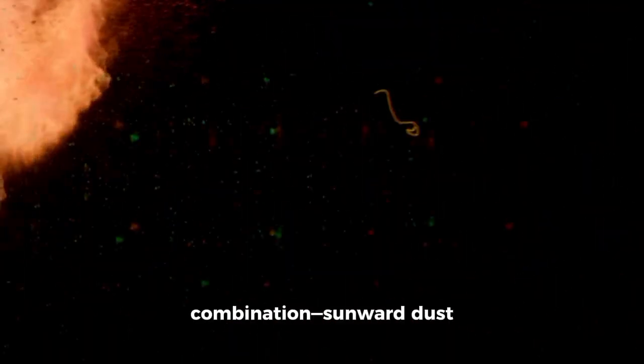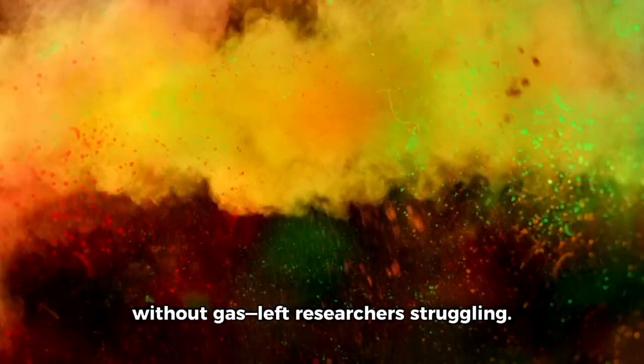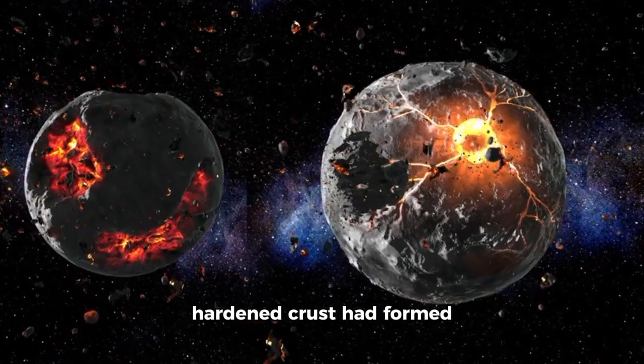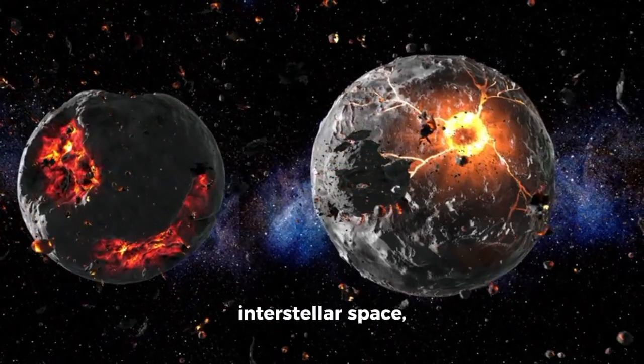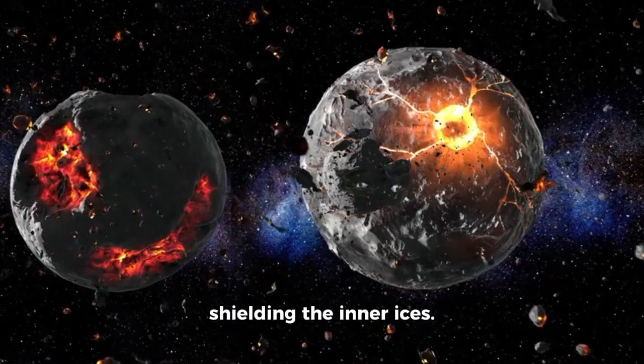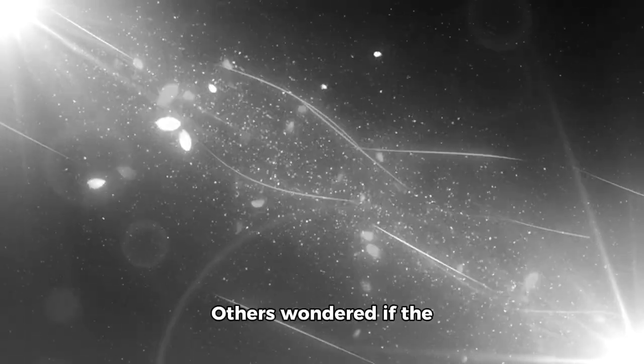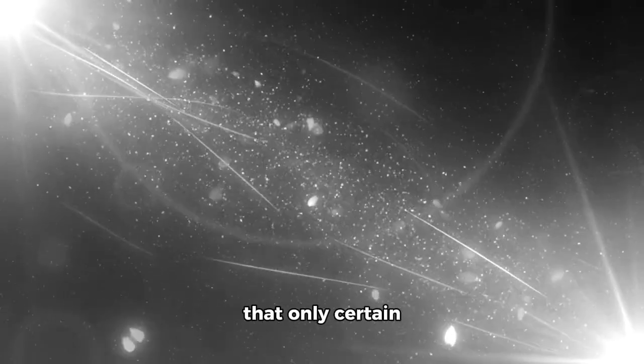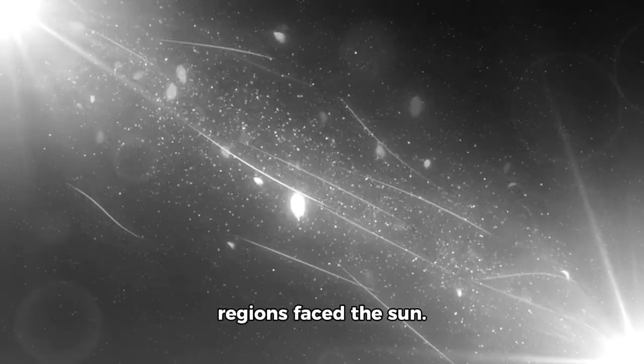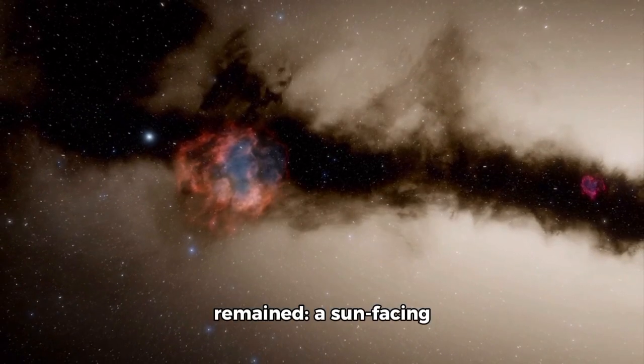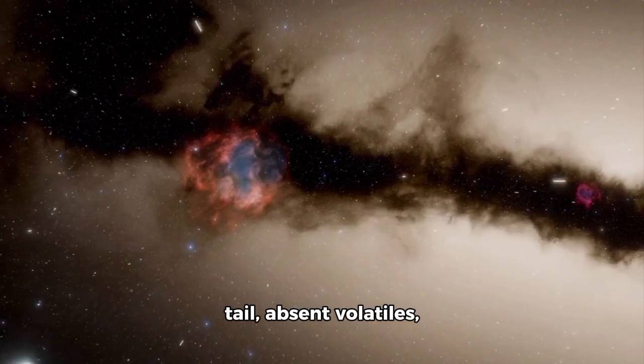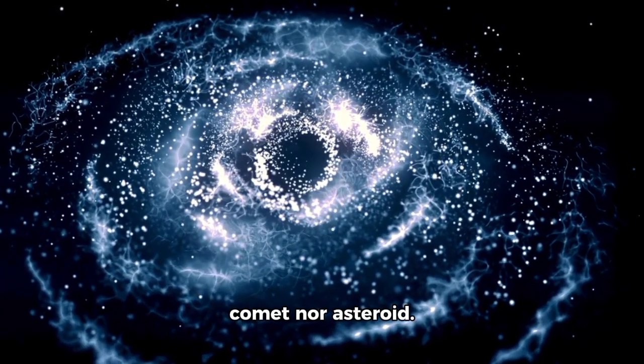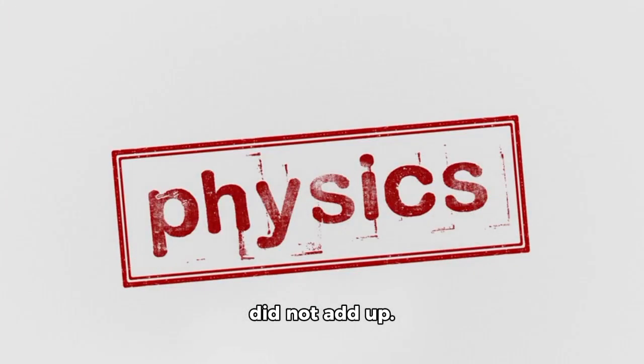This strange combination, sunward dust without gas, left researchers struggling. Some proposed that a hardened crust had formed over billions of years in interstellar space, shielding the inner ices. Others wondered if the spin axis of the comet was fixed in such a way that only certain regions faced the sun. Yet the contradiction remained: a sun-facing tail, absent volatiles, and a physical profile that matched neither comet nor asteroid. The physics simply did not add up.